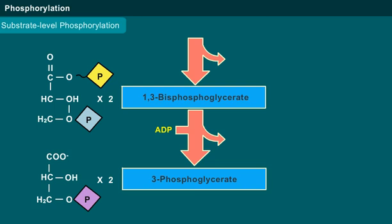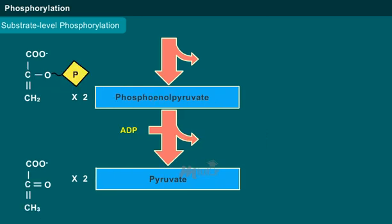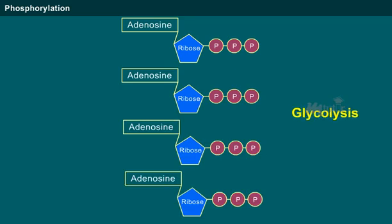Substrate level phosphorylation. The first substrate level phosphorylation in glycolysis is the transfer of phosphate group from two molecules of 1,3-bisphosphoglycerate to 2 ADP molecules, which results in the formation of 2 ATP molecules and 3-phosphoglycerate. The second one involves the transfer of phosphate group from two phosphoenolpyruvate molecules to form 2 ATP molecules and pyruvate. Thus, a total of 4 ATP molecules are produced in glycolysis.